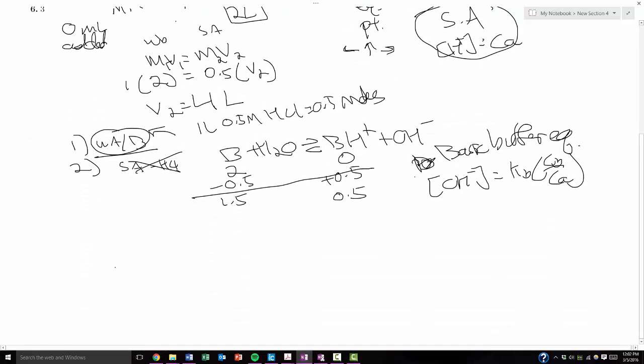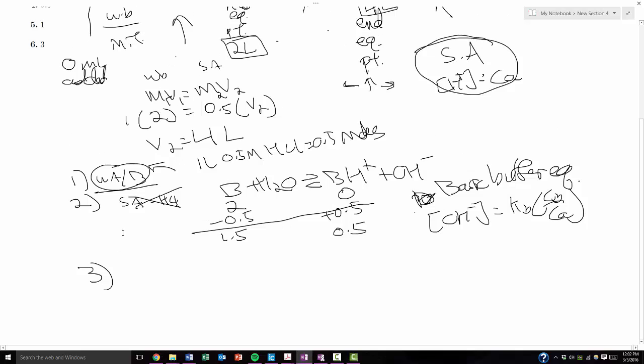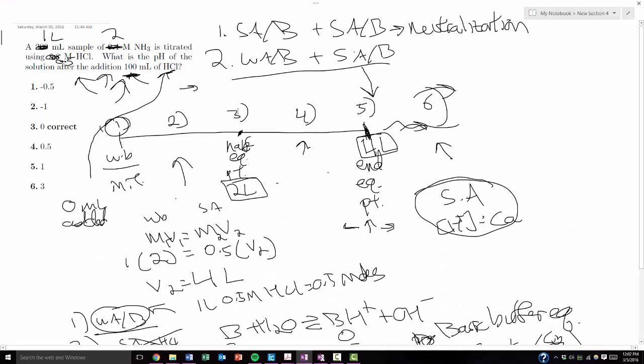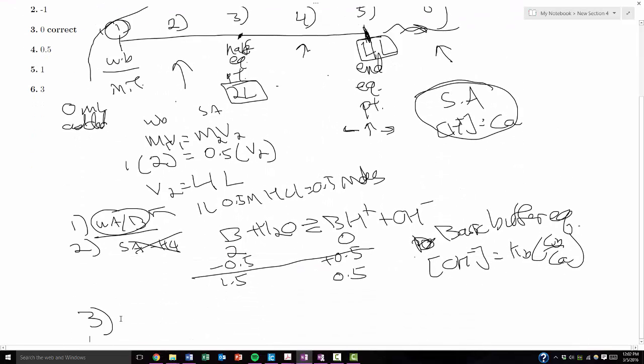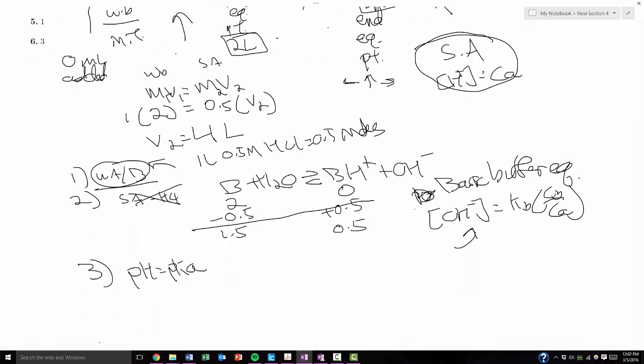Next is if you were in stage three. So stage three is when you're at the half equivalence point. Well, you should know from paying attention in class that at the half equivalence point, pH is going to be equal to pKA. So that's a shortcut. You can also do the buffer equations and you end up with the same thing. But that's a pretty nice shortcut so you don't have to do all the extra math.